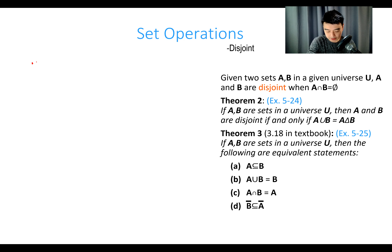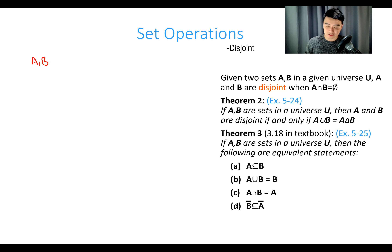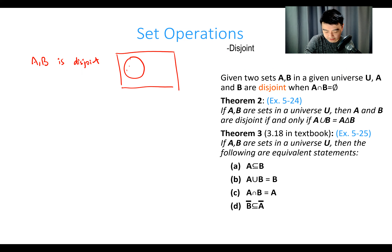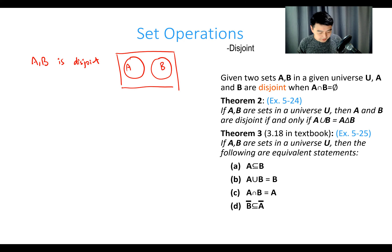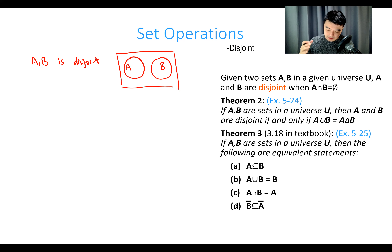When we have two sets A and B, they are called disjoint if the intersection is equal to the empty set. If the intersection is empty, we call this disjointness. On a Venn diagram, A and B being disjoint looks like two separate circles with no overlap — their intersection is empty and they have nothing in common. Theorem 2 states: if A and B are sets in a universe, then A and B are disjoint if and only if A ∪ B = A △ B.